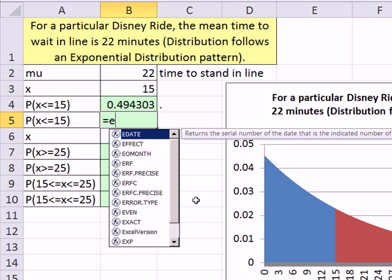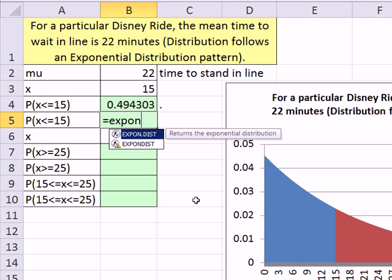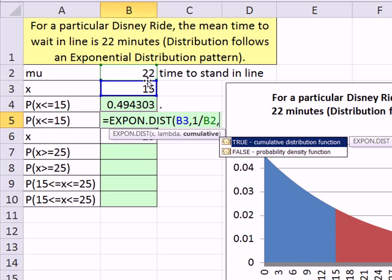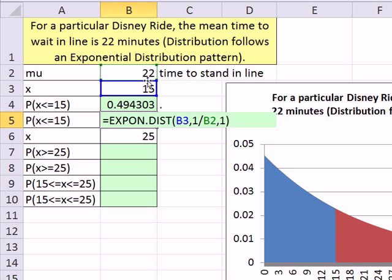We can use the exponent.dist for exponential distribution. There's the old one. There's the new one. There's no difference in the argument. So our x is here. Our lambda, we still have to, it's going to be 1 divided by mu, and then cumulative.